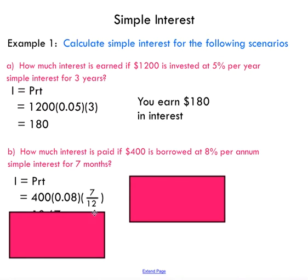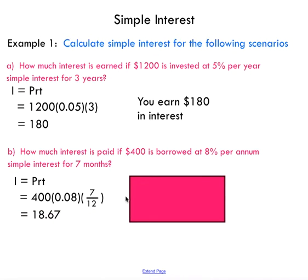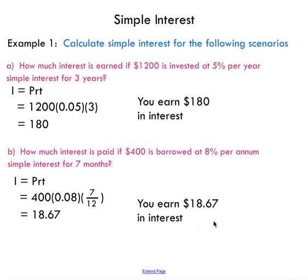7/12 of a year. Multiplying those numbers together gives us 18.67, so we can conclude that over seven months we will earn $18.67 in interest.